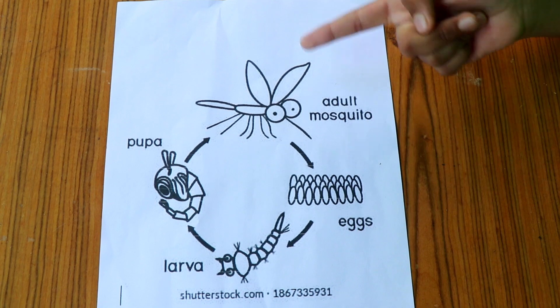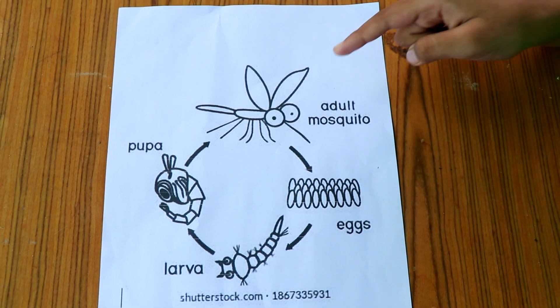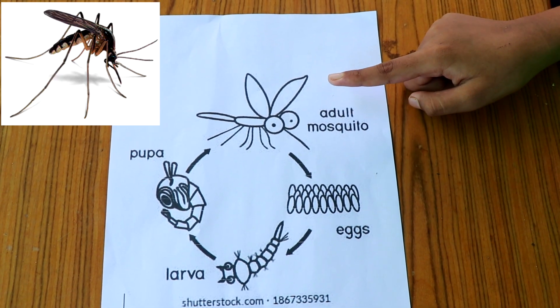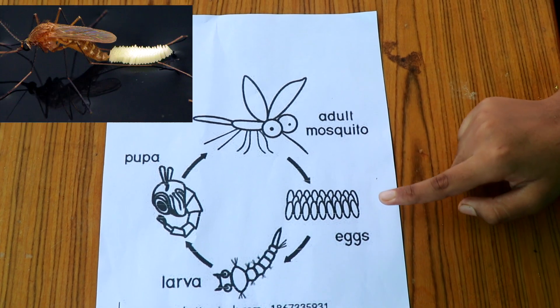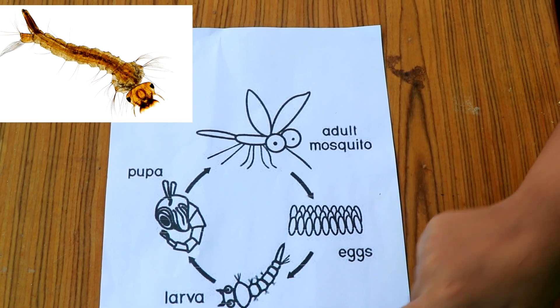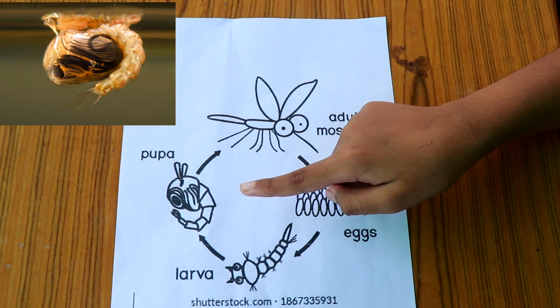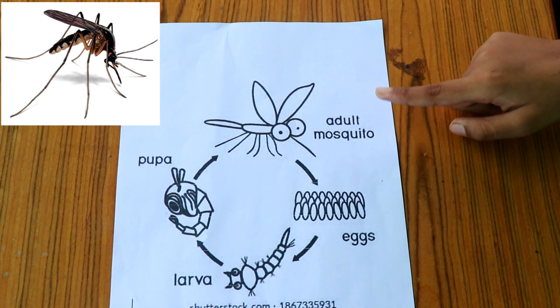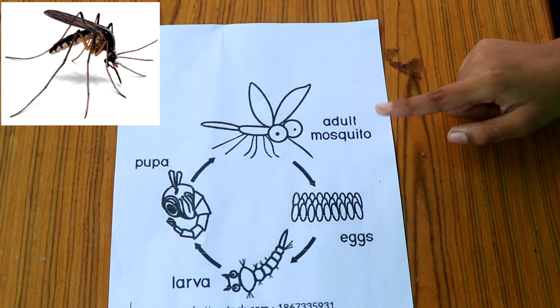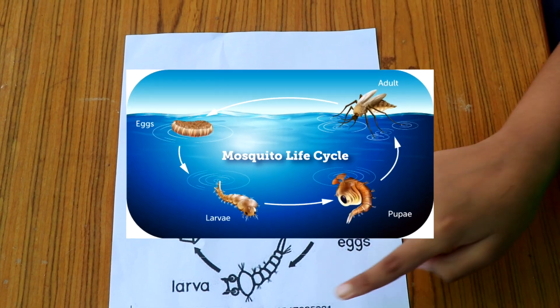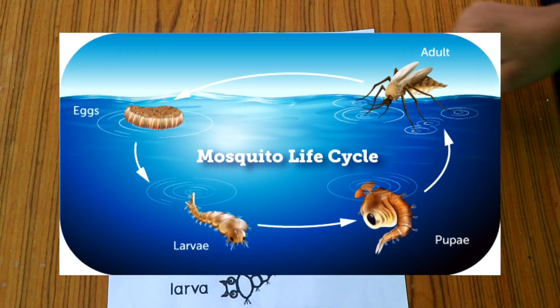This is the life cycle of the mosquito. The adult mosquito lays eggs, the eggs convert into larva, the larva converts into pupa, and the pupa converts into an adult mosquito, which then lays eggs again. This process goes on again and again.